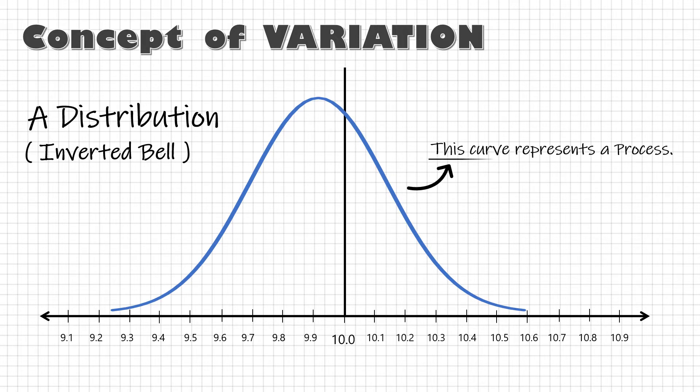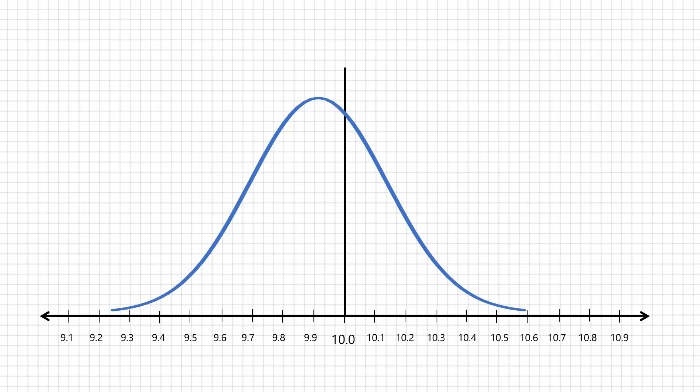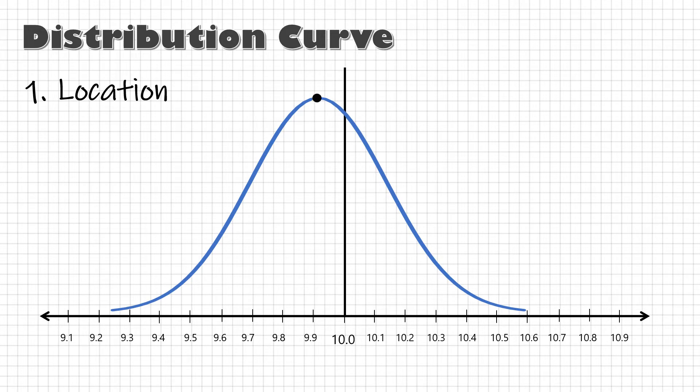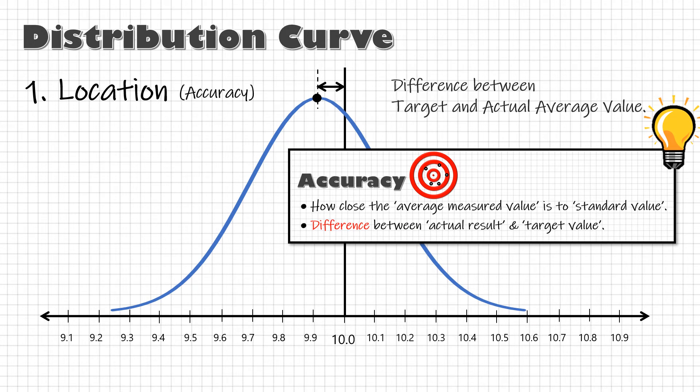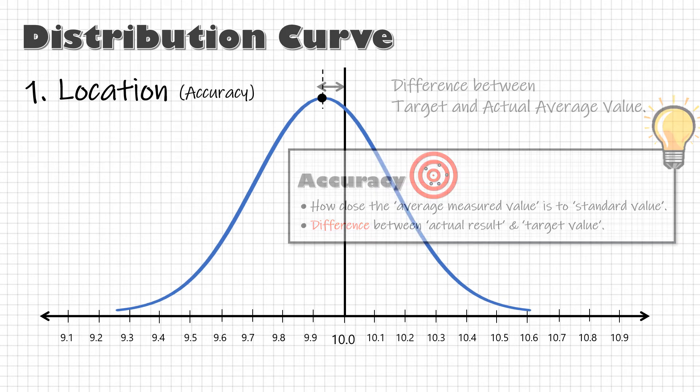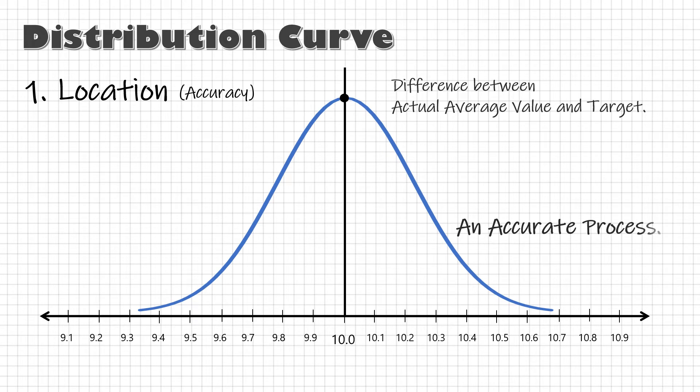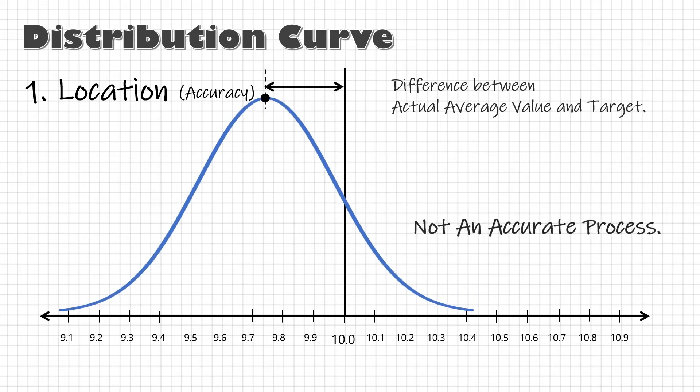Let me say this again, this curve represents a process and it has three characteristics. First is location, the highest point of the curve. It is the difference between target value and the average measured value. Remember accuracy? Location represents accuracy. So this is an accurate process and this is not an accurate process.